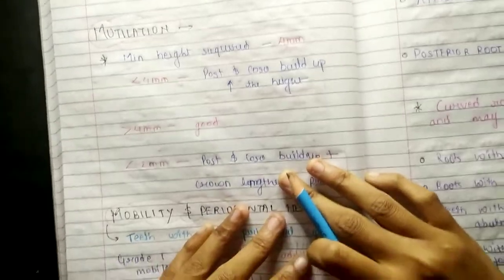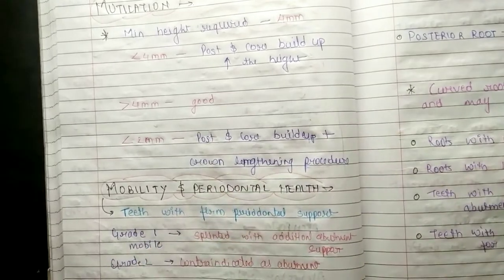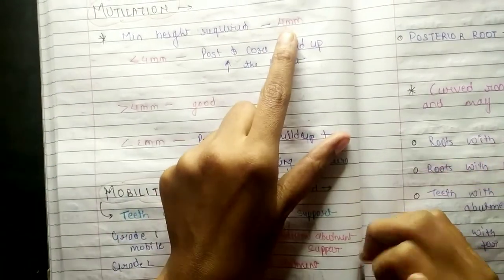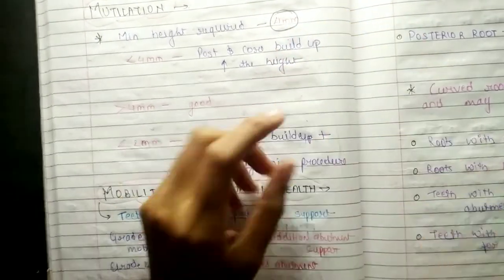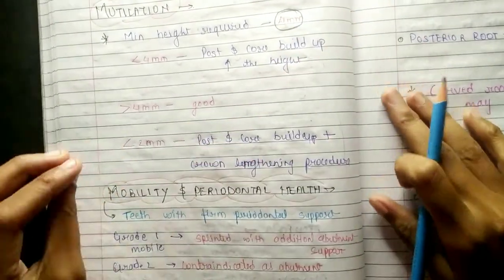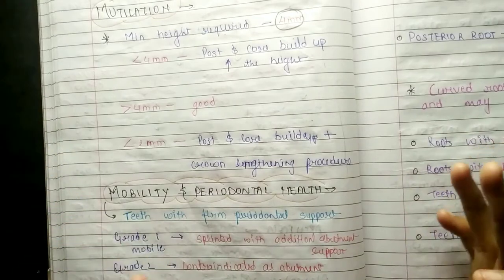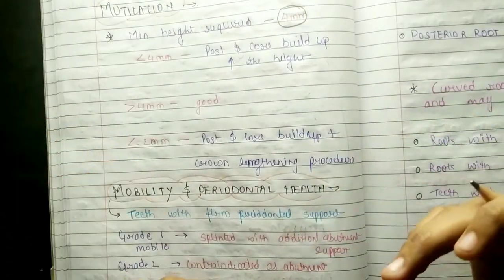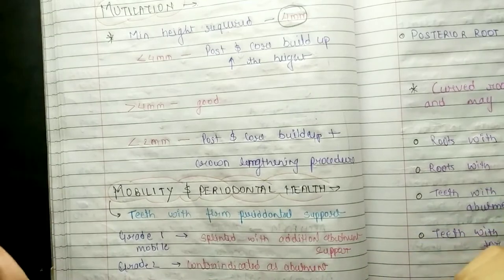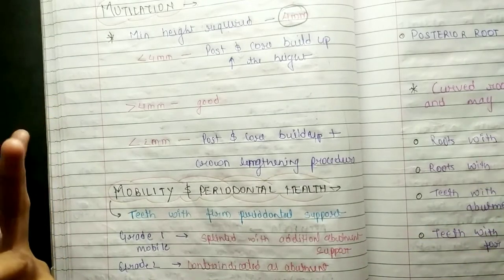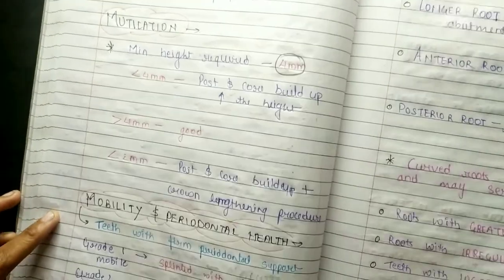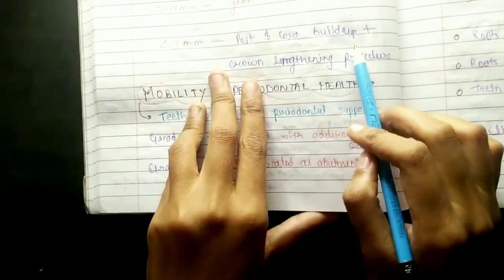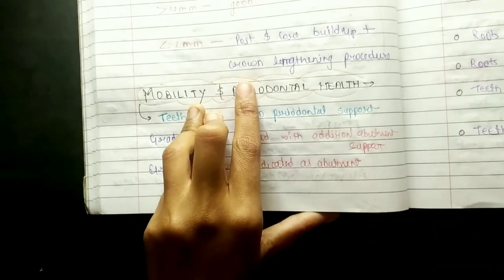Coming to mutilation - what is mutilation? We can use a tooth with minimum height. The minimum abutment height needed is 4mm. If 4mm height is not available, a post and core buildup can be done to increase the height. 4mm is best because it provides adequate support to the abutment, and 2mm is the best margin for post and core buildup during the preparation process.